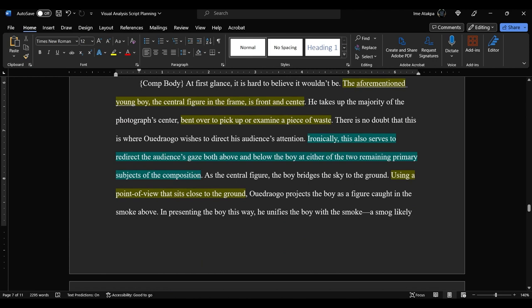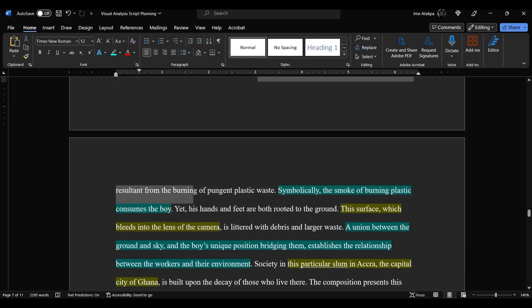So remember, you do want to move back and forth between identification and analysis. I mentioned that the point of view is close to the ground. And this projects the boy as a figure caught in the smoke above. So that's the effect that's created, right? I could probably speak more about that and say why that effect is important. Presenting the boy this way, he unifies the boy with the smoke, a smog likely resulting from the burning of pungent plastic waste. So there's more analysis. There symbolically, the smoke of burning plastic consumes the boy, right? So I have all of that for my analysis.